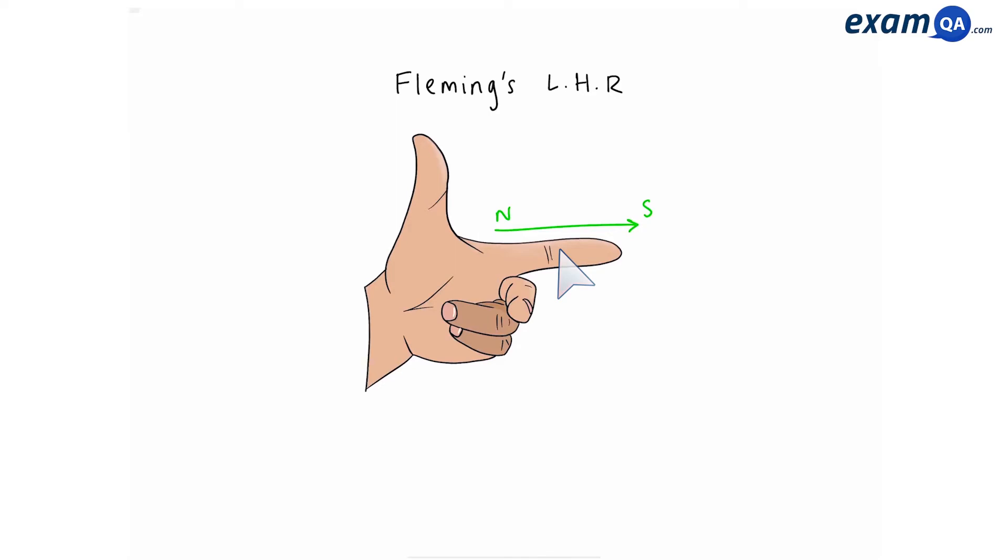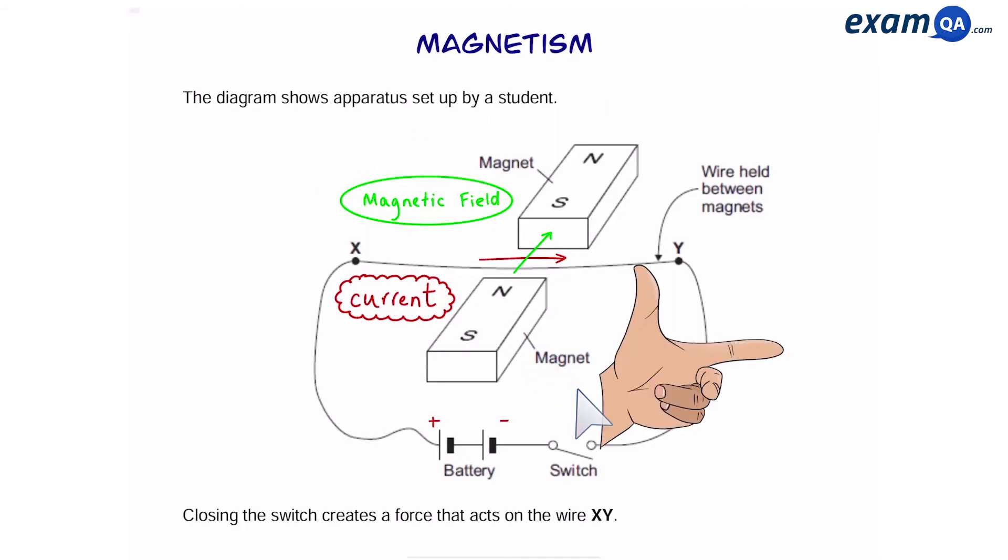Fleming's left hand rule will tell us which way the wire will move. The first finger always points from north to south pole. The middle finger points from the positive towards the negative pole of the current. Once these two are aligned, then we can look at the thumb and that will tell us the motion or the direction of the force. I want to make sure that the first finger points from north to south, which is the green arrow, and the middle finger points along the red arrow, which is the current. So the middle finger is pointing in the same direction that the current is going and the first finger is also pointing from north to south. Now we can look at the thumb. The thumb is pointing upwards, meaning that the force on the wire is upwards.